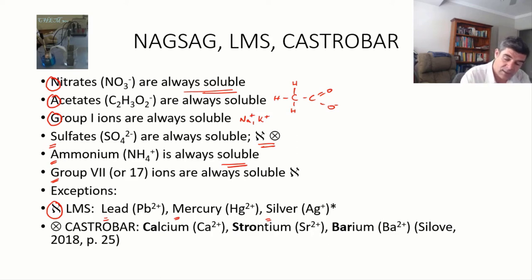Now, this also has an exception for the CASTROBAR. The CASTROBAR is calcium, strontium, barium. These are group 2 metals, and so they're an important group as well. Calcium sulfate, strontium sulfate, and barium sulfate, each of these are also insoluble. So we have our general rules, and then we look at our exceptions.